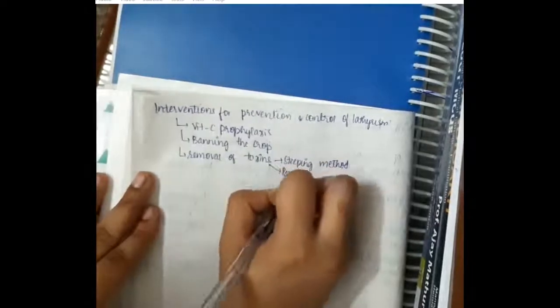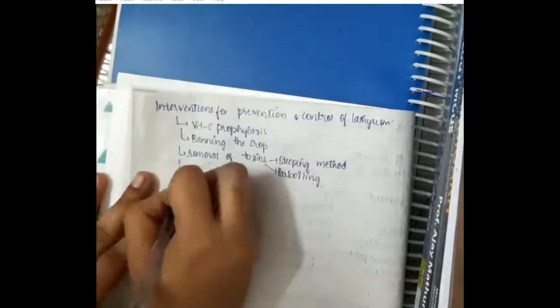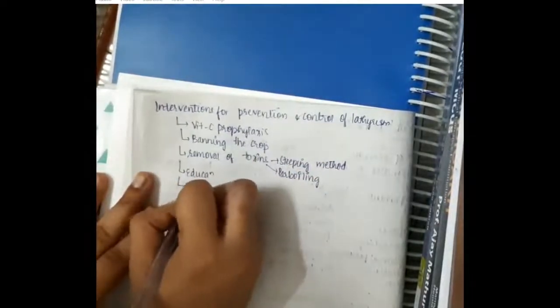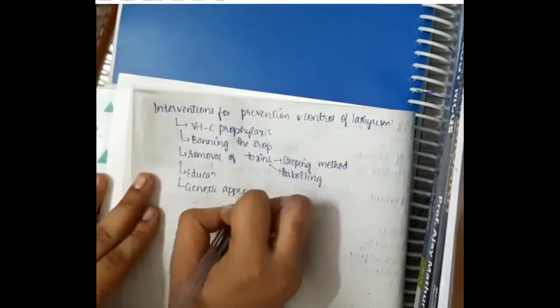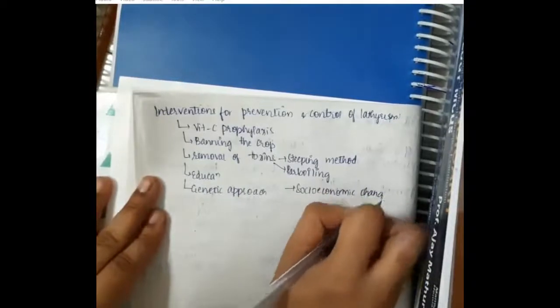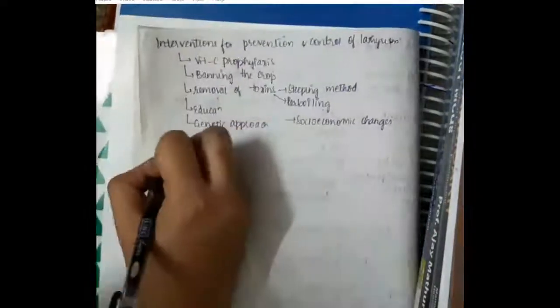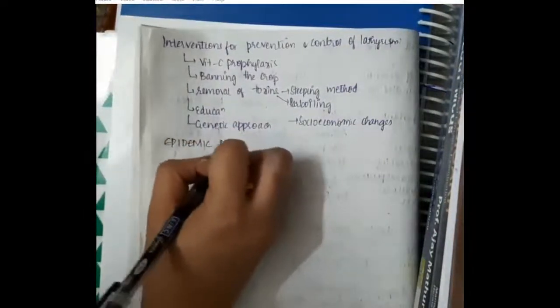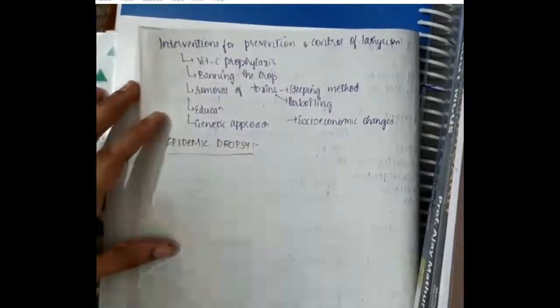Steeping method and parboiling method and we can give education to the people to differentiate it and genetic approach can be given. Socioeconomic changes can be done but the best intervention is removal of toxin and vitamin C prophylaxis and banning the crop.